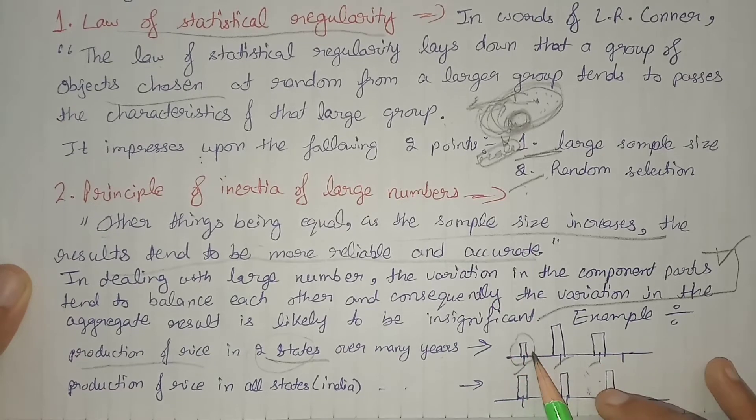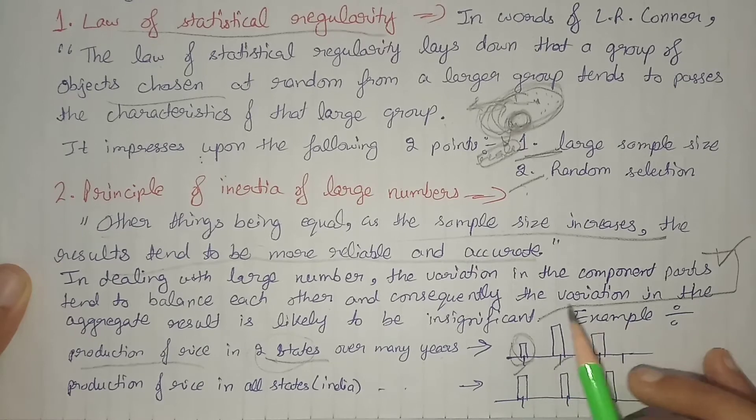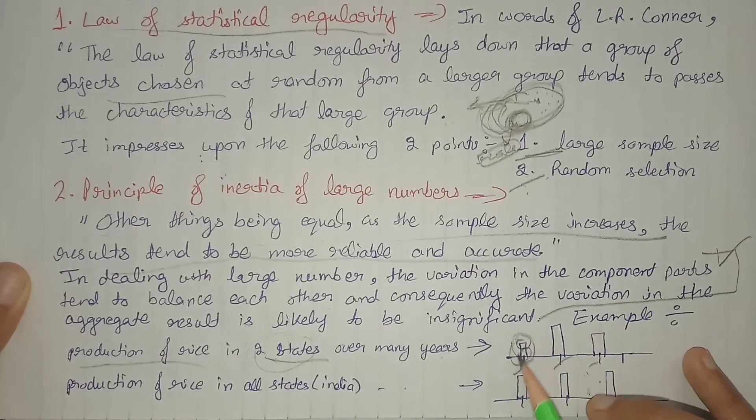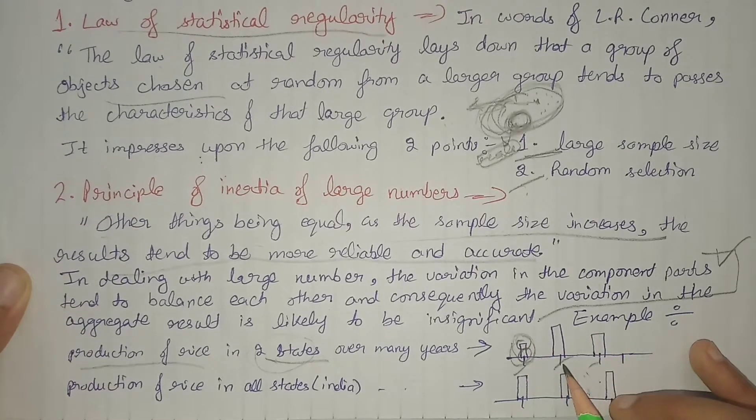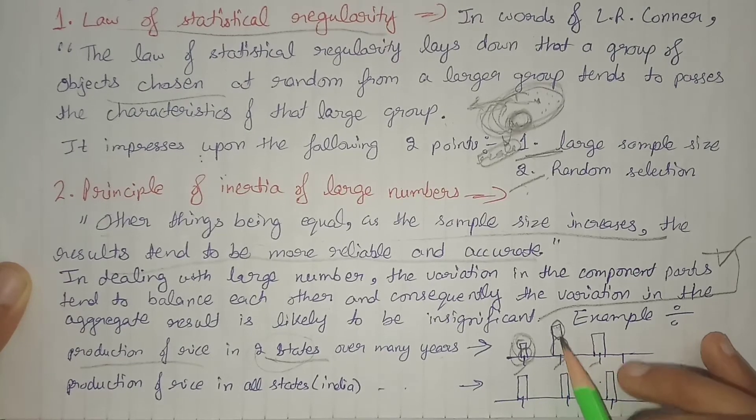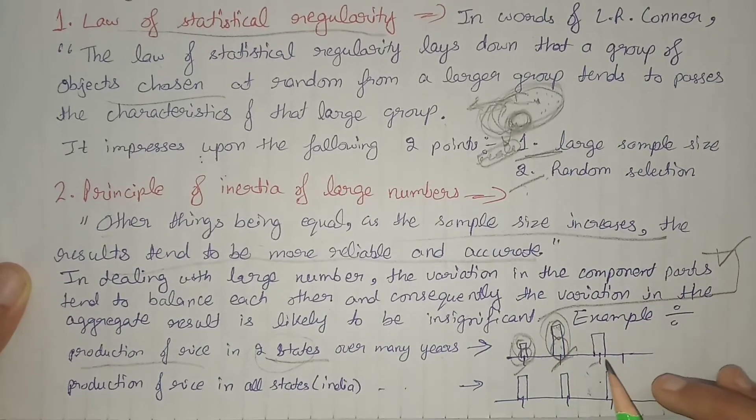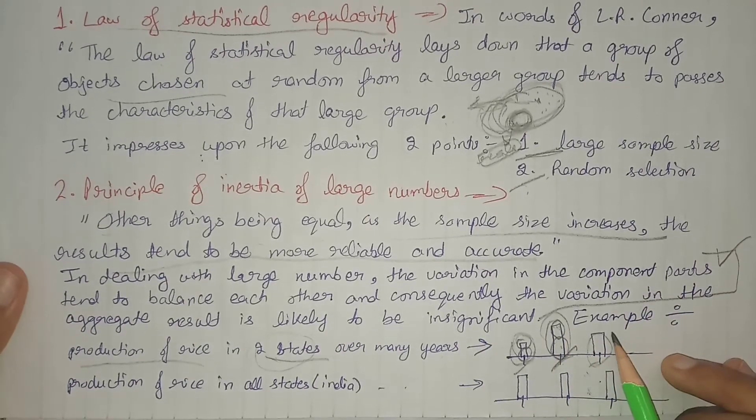Let's say in the first year, the total production in both states was normal. In the second year, the production in both first and second states increased considerably, so overall production also increased.